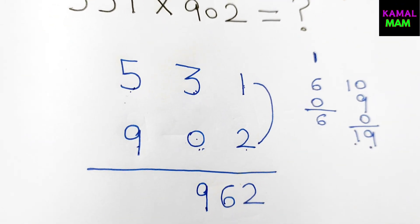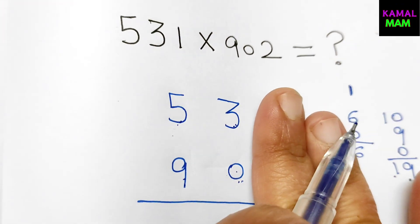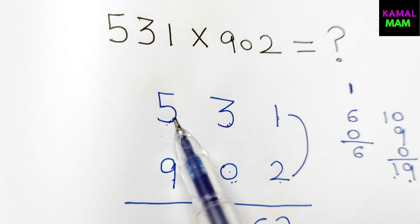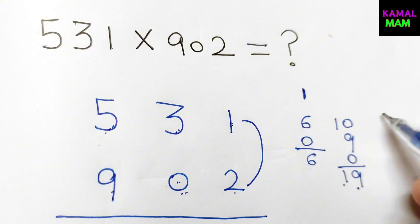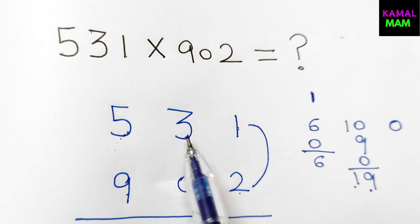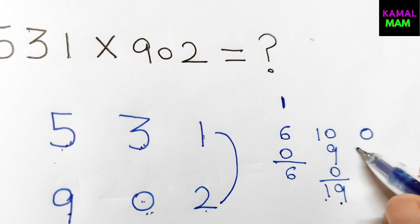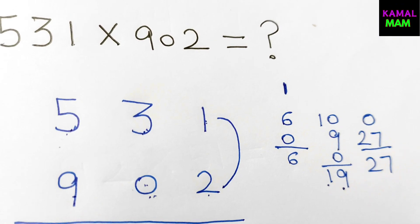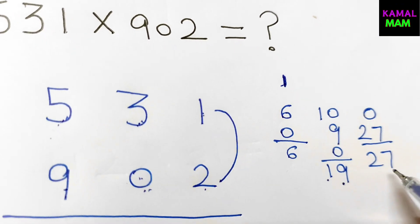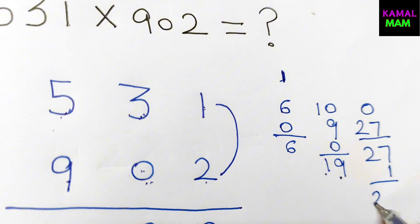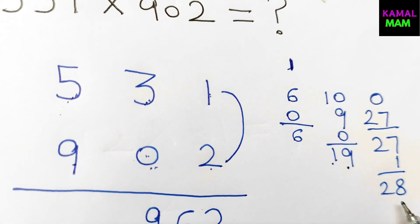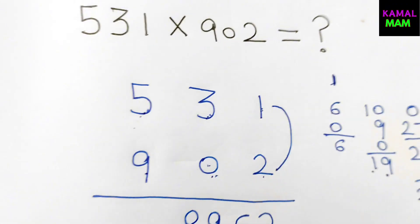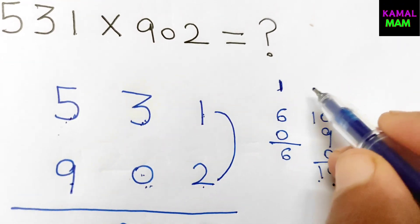Now just forget these digits. Cross multiply it: 5 into 0, we get 0. Now 3 into 9, we get 27. Now just add them up, we get 27. Now 1 is in our hand, so just add them up, we get 28. Now just write down the last digit, that is 8. Now this 2 will be in our hand.